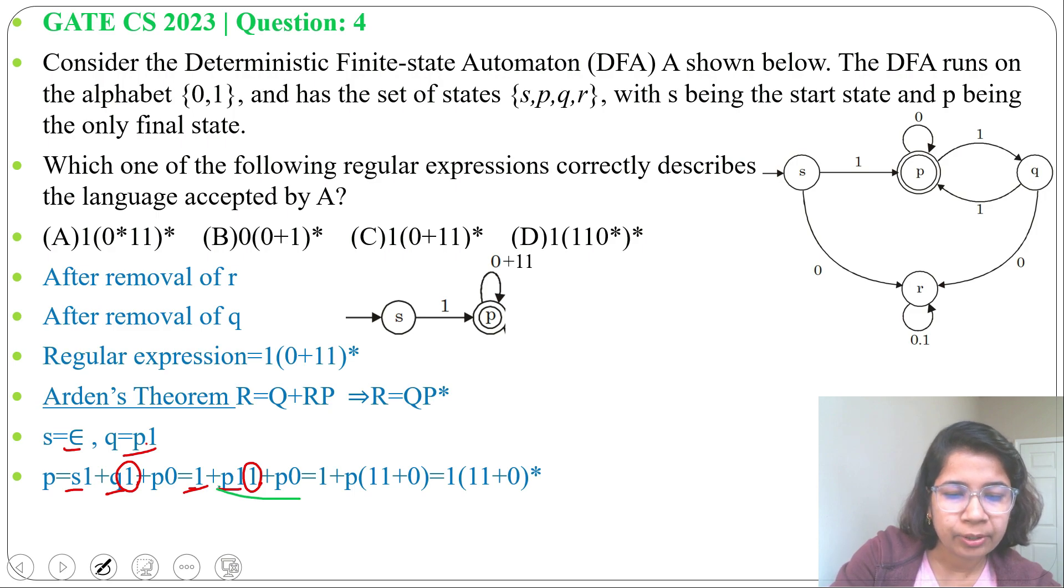Now I'll take P common from these two terms. So after taking P common it will be 1 + P(11+0). Now it's in this format. So this is our Q, this is our R, this is our P. So regular expression will be 1 for Q, then for P (11+0) whole Kleene closure. So regular expression is 1(11+0) Kleene closure.